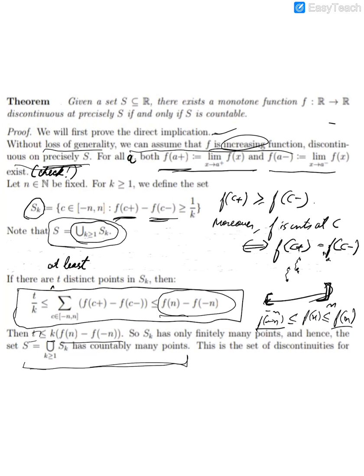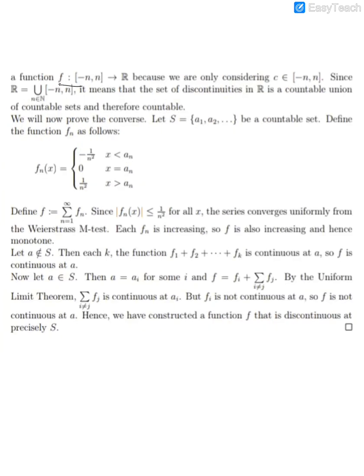But we are not yet completely done because notice that we did it for only [-n, n], so we solved the problem when we restrict f to [-n, n] for some natural number n. But then R is the countable union of these sets [-n, n]. And hence the set of discontinuities in R will also be a countable union of countable sets. So this part is done.